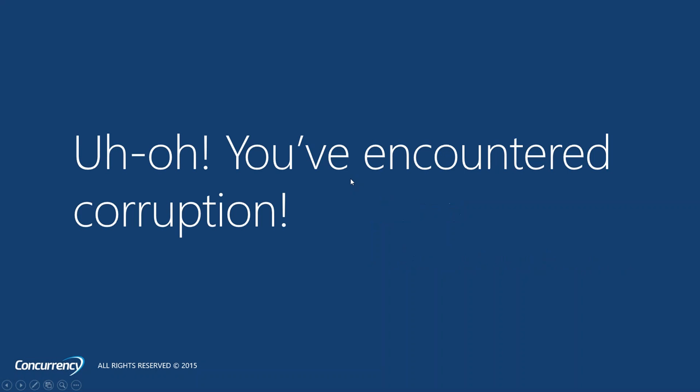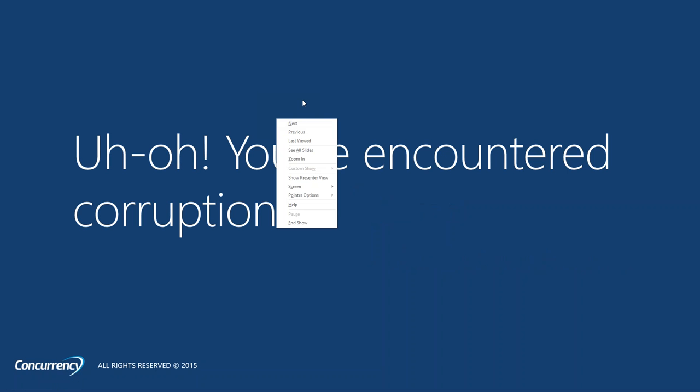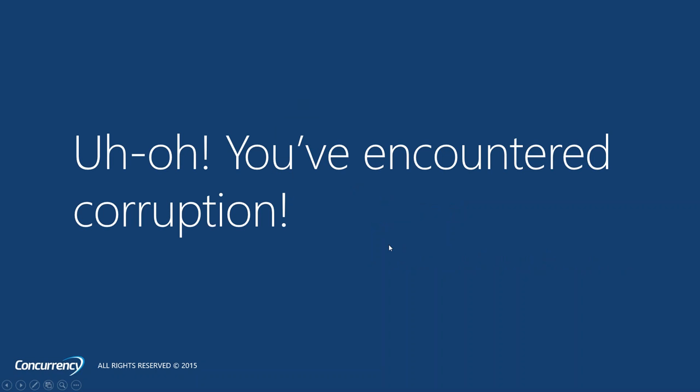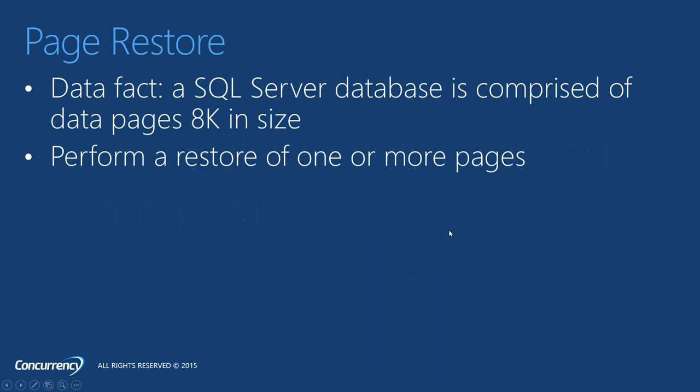Our next restore topic is when we have the potentially most dreaded problem: corruption. Corruption happens on a regular basis. We can do everything we can to try to prevent it — running regular DBCC CHECKDB, having our databases in checksum mode — but the problem is your data files are still on storage, and storage is hardware, and hardware can have problems at any point in time. You need to be prepared for when you do see corruption.